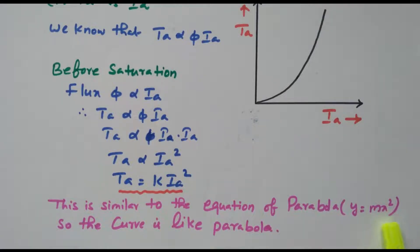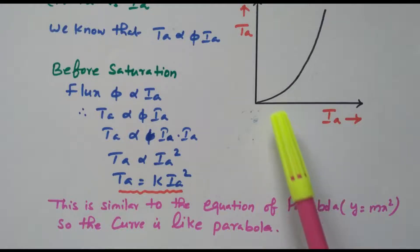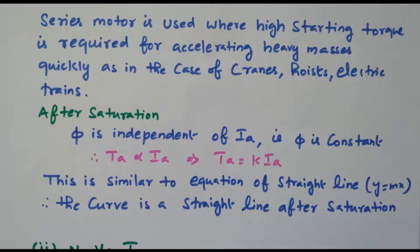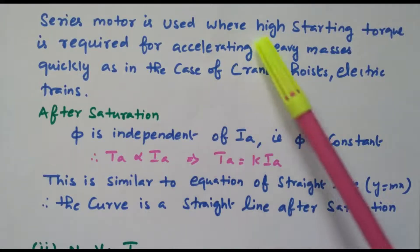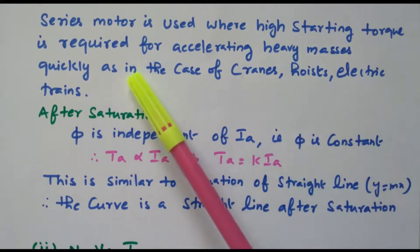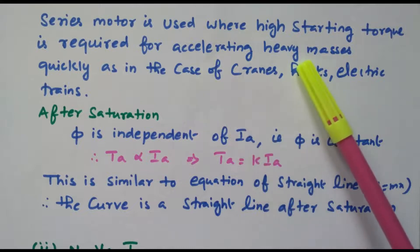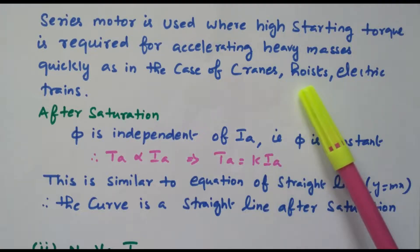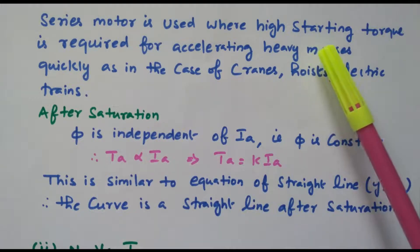As I_A increases, the torque increases in a parabolic manner — not linear, but parabolic — so the curve is parabolic. Series motors are used where high starting torque is required for accelerating heavy masses quickly, as in the case of cranes, hoists, and electric trains. So the series motor is used for high starting torque.